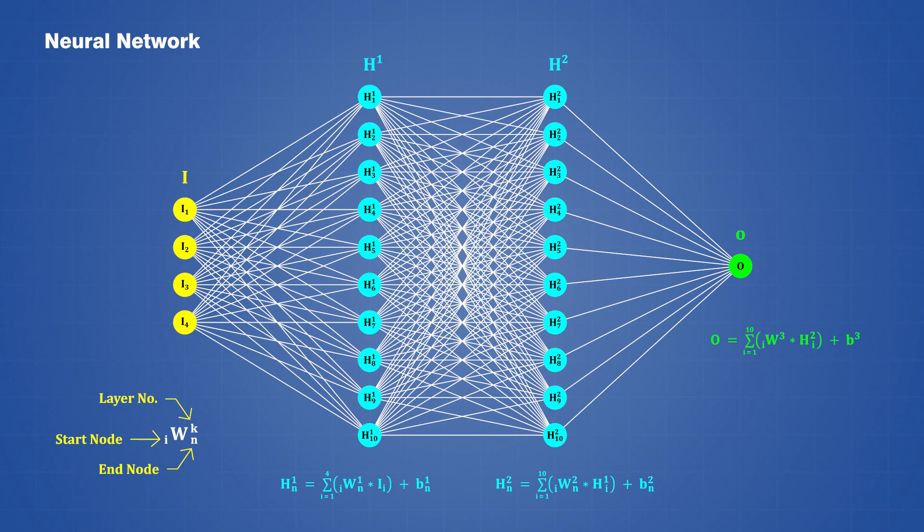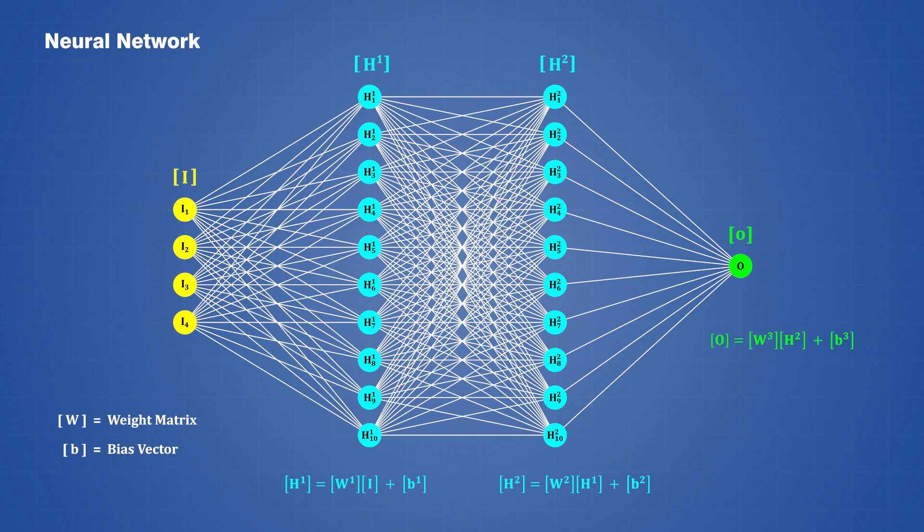Now this is obviously quite a bit of algebra just to get from four input values to one output value, but fortunately we can simplify it down to just a few lines using vectors and matrices. If we represent each layer of the network as a vector, then we can get from one layer to the next simply by multiplying the previous vector by a matrix of weights and adding a vector of biases. This makes the computations a lot easier to handle, especially when coding a neural network in a computer program.